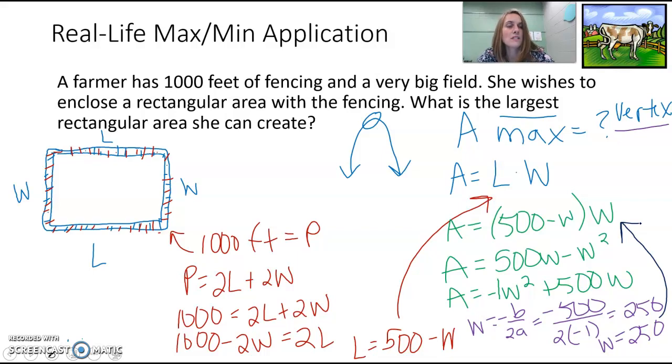So, in either one of those equations, it doesn't matter. Alright, so area equals 500 minus 250 times 250. So if we do that math, area is equal to 500 minus 250 is 250. 250 times 250 is 62,500.